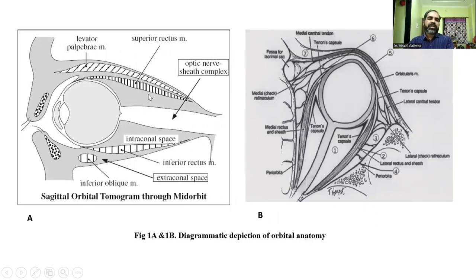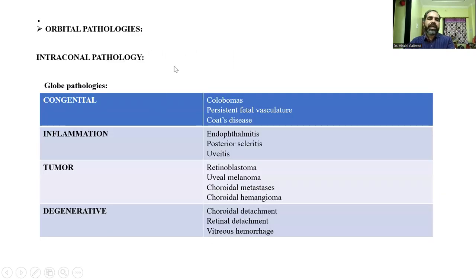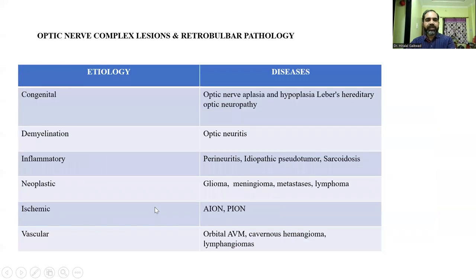This image shows the anatomy of the orbit showing various structures. The various pathologies which affect the orbit include intraconal pathologies such as globe pathologies. Congenital abnormalities affecting the orbit include colobomas, inflammatory conditions such as endophthalmitis, tumors such as retinoblastoma, and degenerative conditions.